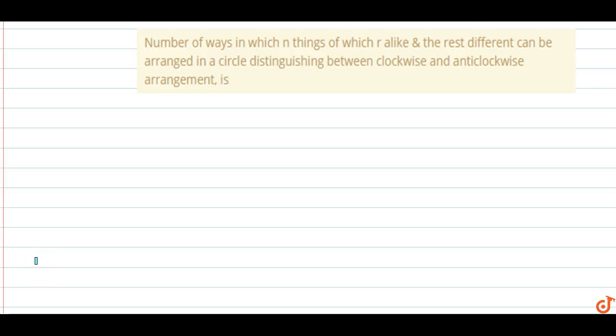In this question, the number of ways in which n things, of which r are alike and the rest different, can be arranged in a circle distinguishing between clockwise and anti-clockwise arrangement is: